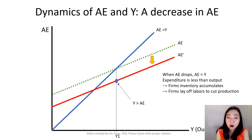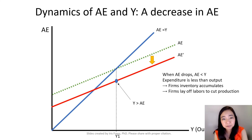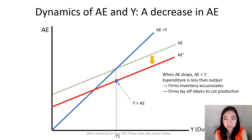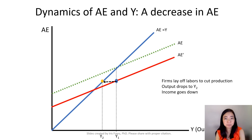So now we are out of equilibrium. In particular, our output is higher than aggregate expenditure, meaning firms will have inventory accumulate, and the firms will try to cut their production by letting go some workers. Here, the firms cut their production, and as a result, output goes down from Y1 to Y2, and the firms are able to cut their production because they laid off some workers.